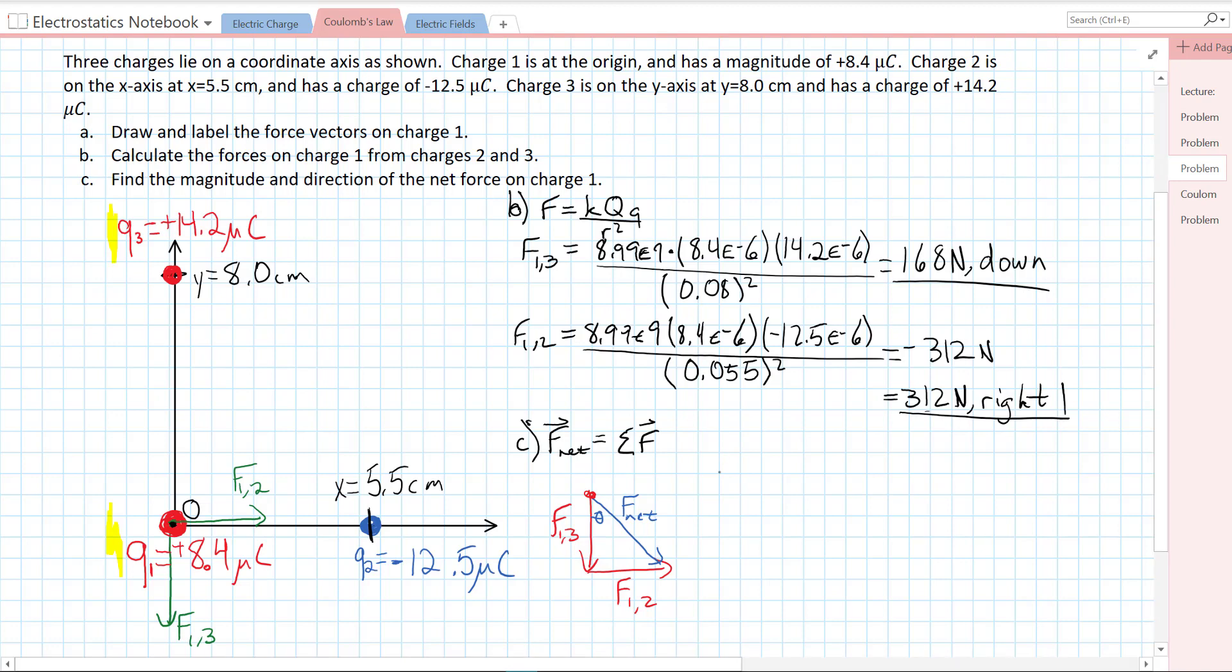The magnitude, we can just use the Pythagorean theorem because this is a right triangle. F net is just going to be the square root of force 1-2 squared plus force 1-3 squared. That's the square root of 168 squared plus 312 squared. The magnitude of our net force equals 354 newtons.